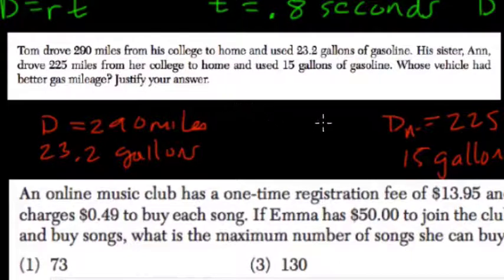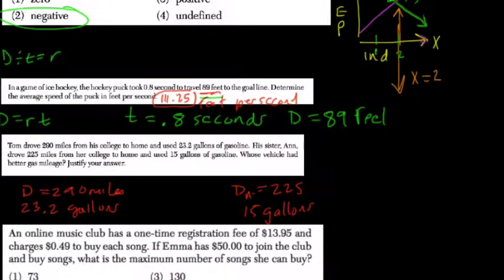Whose vehicle had better gas mileage? With gas mileage, you want to know how many miles you can go per gallon. It's like a rate, so it's going to be the miles divided by the gallons in both cases.